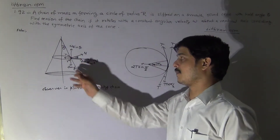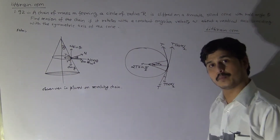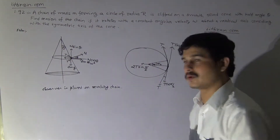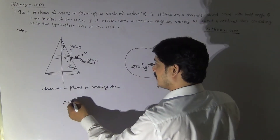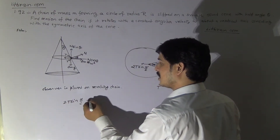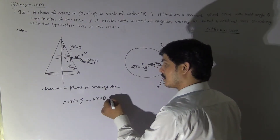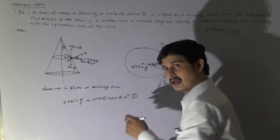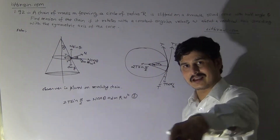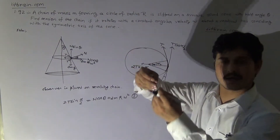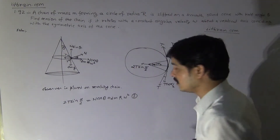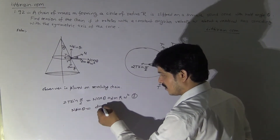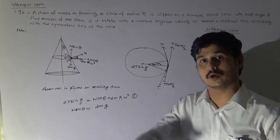Now writing the equations: N sinθ = dm·g (vertical equilibrium). For the inward-outward direction: 2T sin(α/2) = N cosθ + dm·R·ω². Note that N here is the normal reaction on a small segment of the chain, not the whole chain.